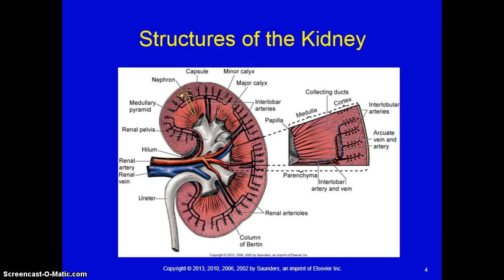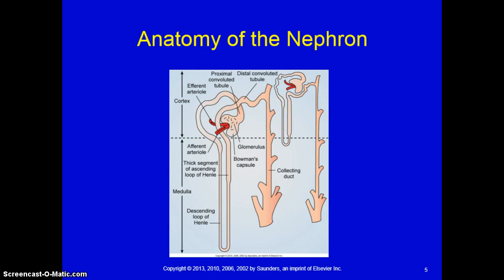Looking at the microscopic level, we need to talk about the nephron. The nephron is the working or functional unit of the kidney — it's where urine is actually formed from blood. Typically each kidney has about a million nephrons, and each nephron separately makes urine from the blood. The blood supply to the nephron is delivered through the afferent arteriole, which is the smallest, most distal portion of the renal arterial system.